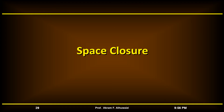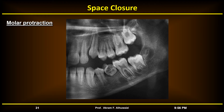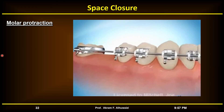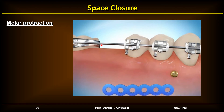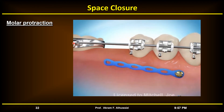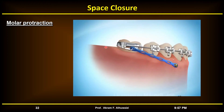Space closure can be carried out by molar protraction, incisor retraction, or conservative closure. For molar protraction, early extraction of deciduous teeth with no permanent successors allows forward movement of the first permanent molars, though fixed appliances are generally required to complete alignment and correct axial inclinations. TADs can be used to protract these molars, aiding anchorage, while mesial tilting must be controlled with good biomechanics using the fixed appliance.